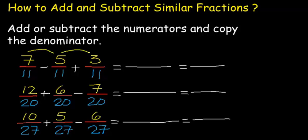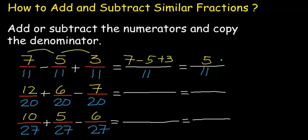Add or subtract all the numerators. We have here 7 minus 5 plus 3, and just copy the denominator. Our denominator here is 11. 7 minus 5 is 2, and 2 plus 3 is 5. Our denominator is 11, so we have 5 over 11.